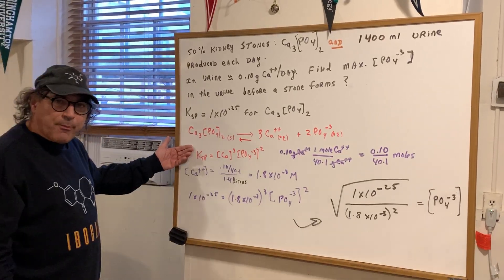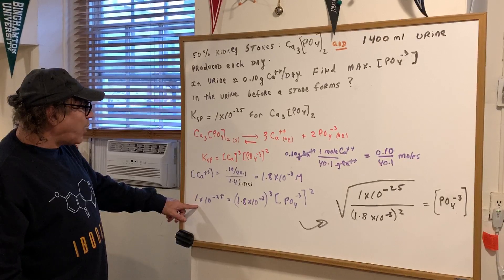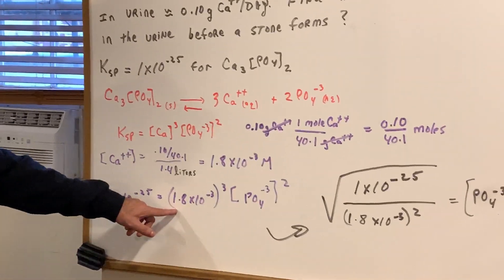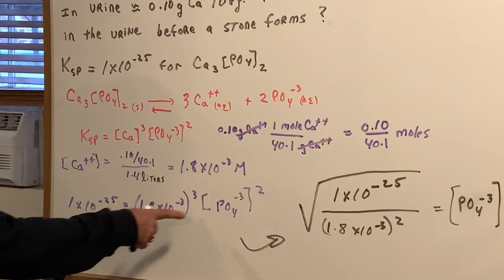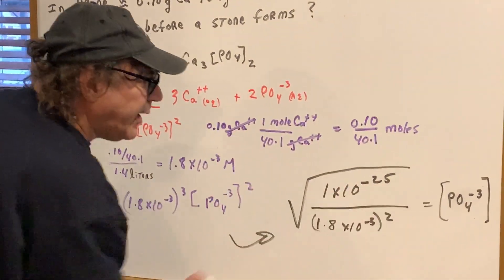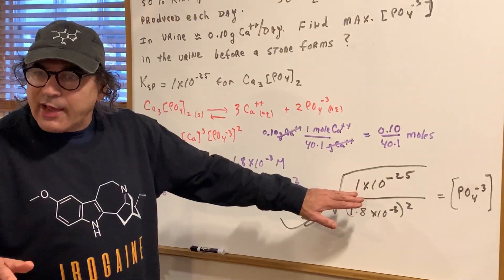And we're there. Now we're just going to go back and substitute in. We know the KSP is 1 to the minus 25. There's the calcium cubed and phosphate squared. So we're going to divide, and then we're going to square root it. And I just set it up.